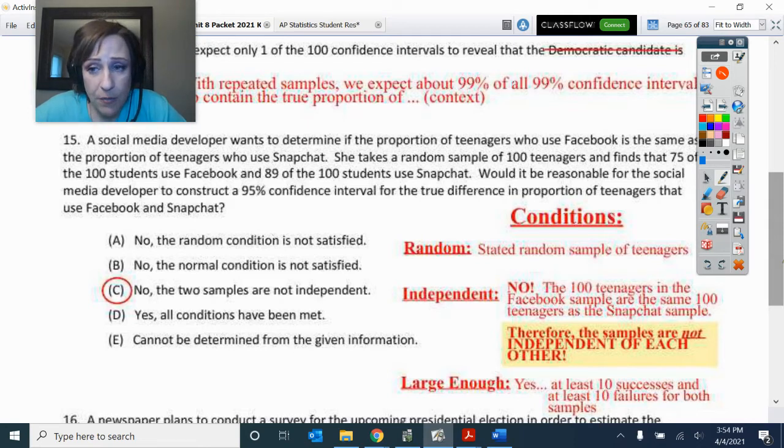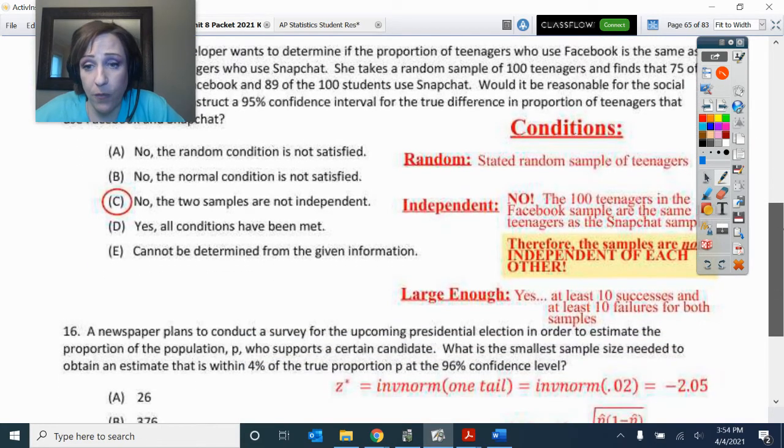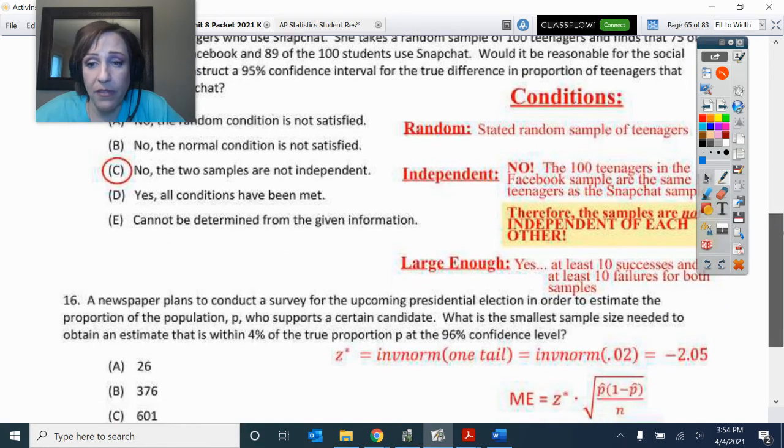So would it be reasonable for the social media developer to construct the 95% confidence interval for the difference in the proportion between those two proportions? So we did have a random sample, but independent? No, that's the problem. These samples are not independent of each other. So that is what is wrong with that one.